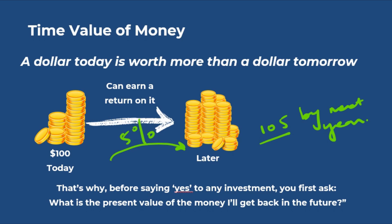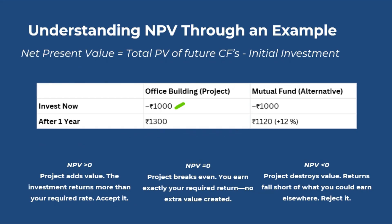That's where net present value, or NPV, comes in. Whenever you're evaluating any investment, the real question is not just how much money will I get — it's how much is that future money worth today. In other words, how do you adjust future cash flows to reflect their true value in today's terms? Say you invest $1000 in an office building today and expect a return of $1300 after one year.